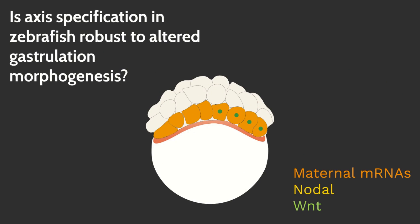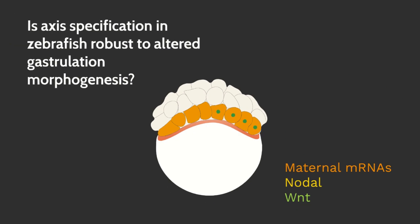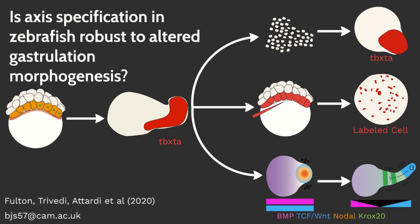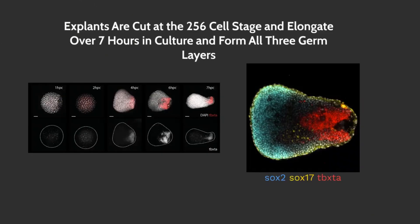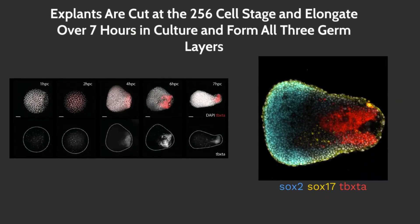To determine if germ layer specification is robust to altered cell-cell positioning, we explant blastomeres at the 256th cell stage and culture them in vitro for 7 hours. We term these explants pescoids. We see that culturing blastomeres in this way results in elongation of the explant and generation of all three germ layers.